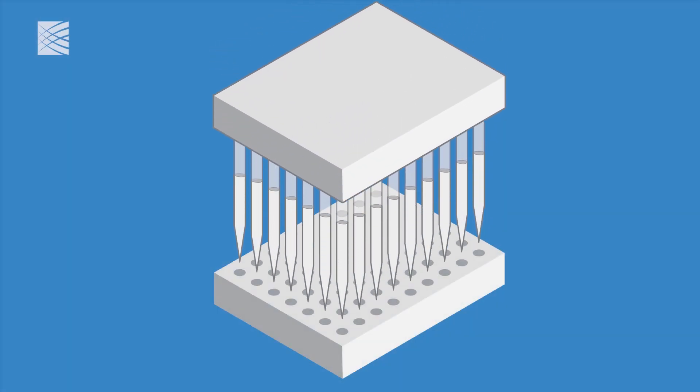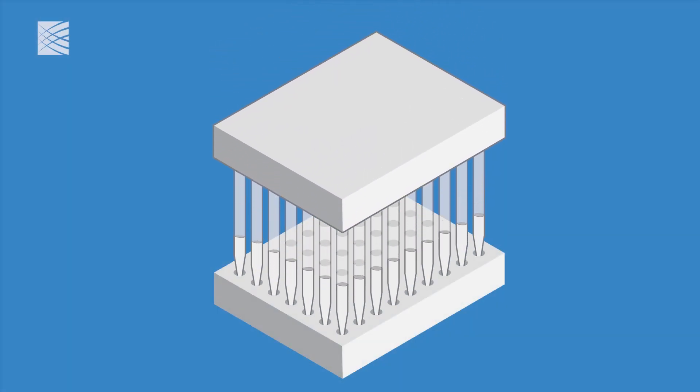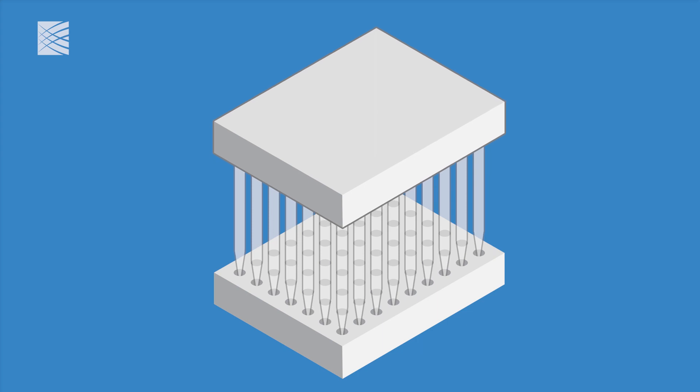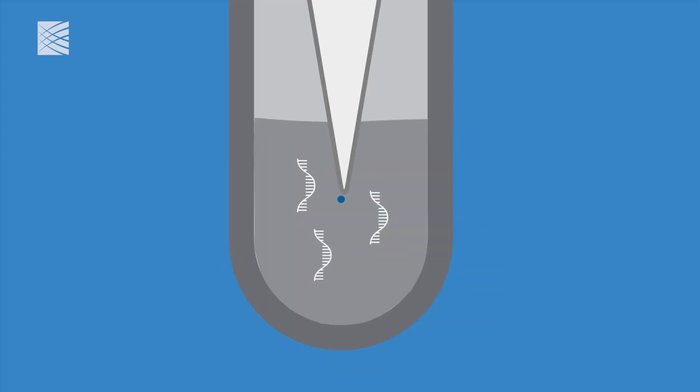Another machine transfers the samples from individual tubes to high-capacity trays so that many samples can be analyzed at the same time. An extraction machine uses small magnetic beads to capture all RNA in the samples.